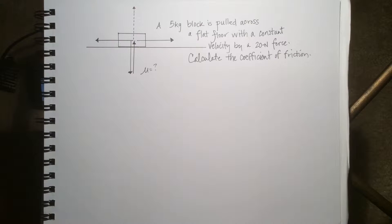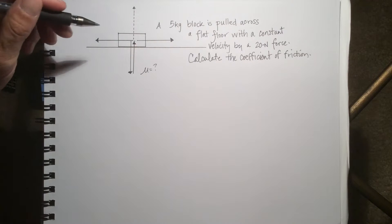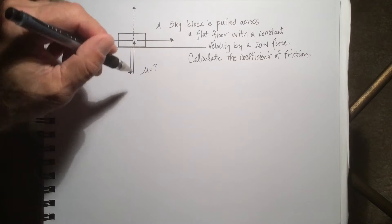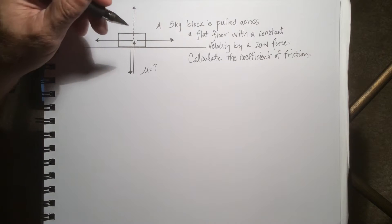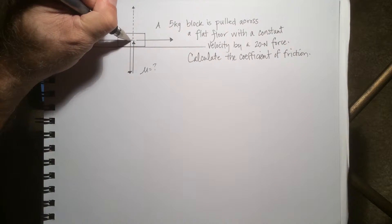We need to identify a few things. The free body diagram is already drawn for the block. If we can identify a few of these forces, that will help us calculate the coefficient of friction. First of all, let's consider this simple.